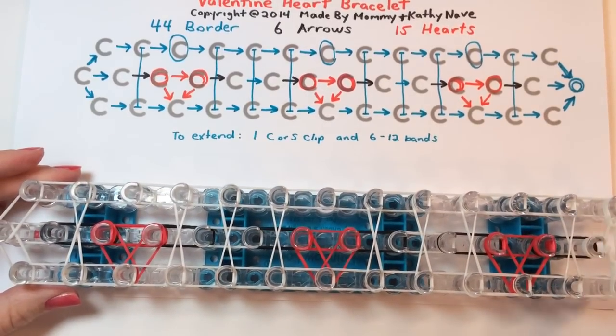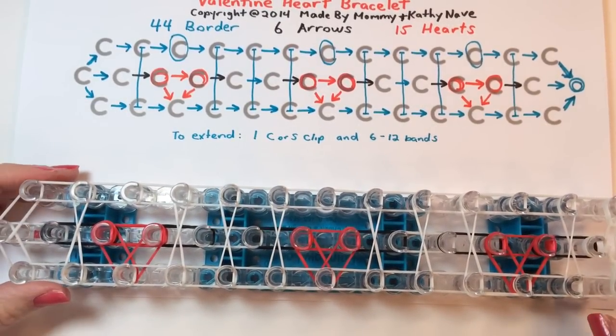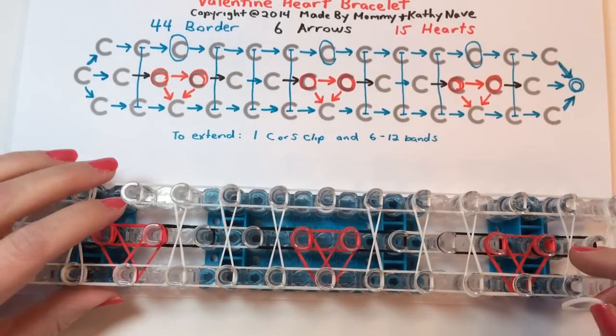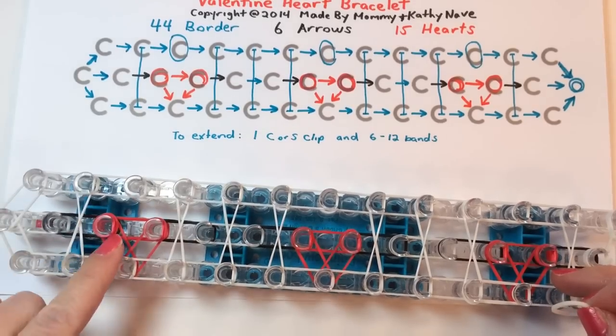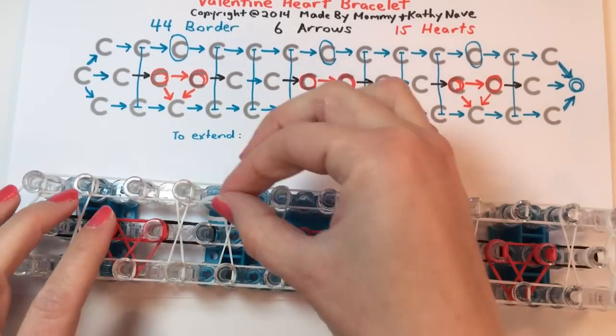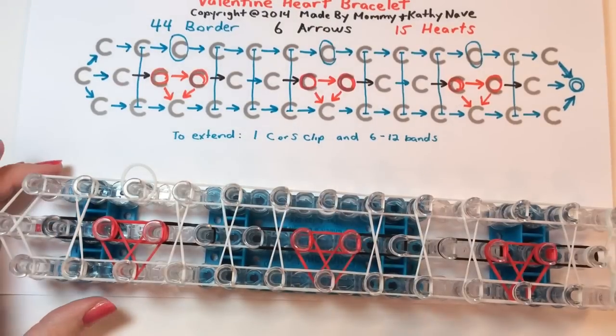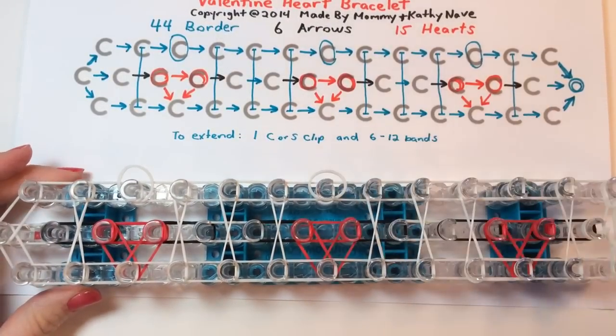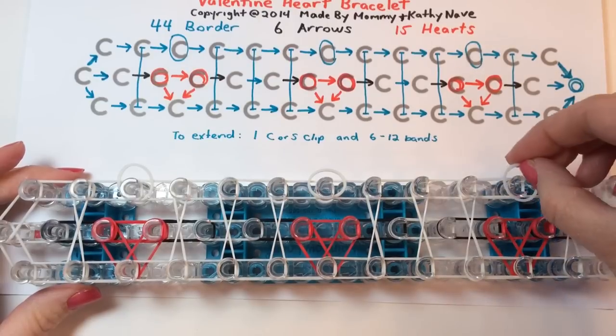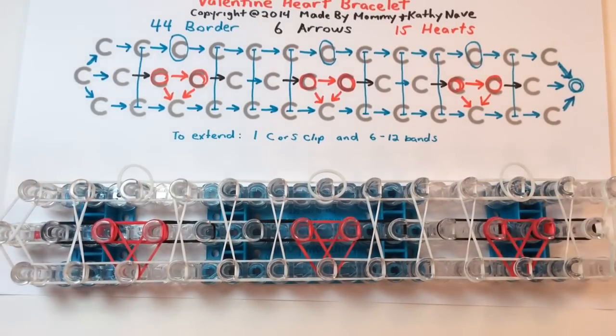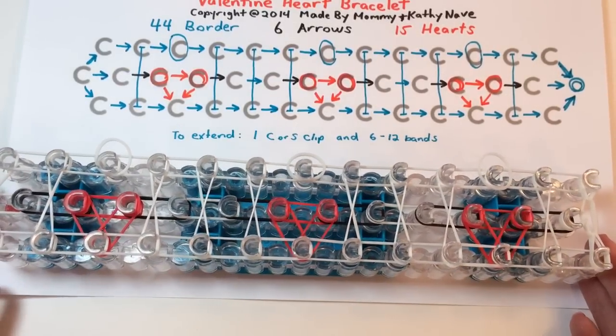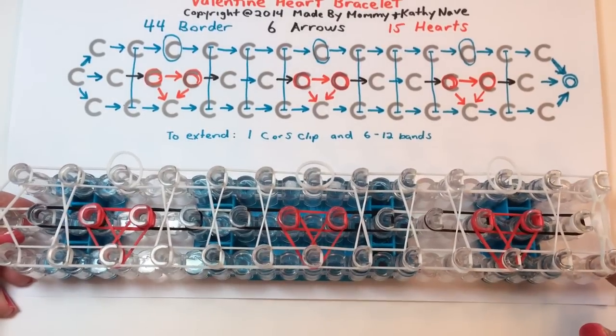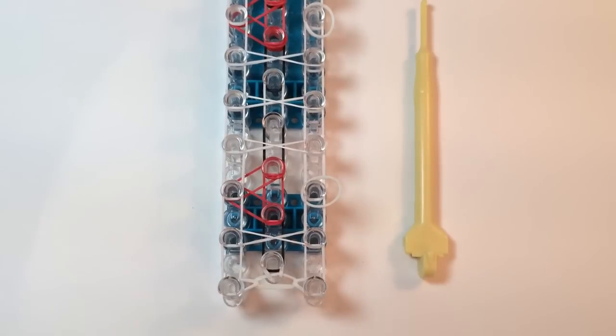And now we have just three more of your border color rubber bands to place. They're going to be left loose for now because we'll hook them later. They're going to go directly above each heart. You're going to take one and just leave it there for now. We're going to hook it later. But this way all your rubber bands will be in place and we can get rid of the chart. And that's the last one. So that is all the rubber bands you'll need other than the extension if you want to make this a bracelet.